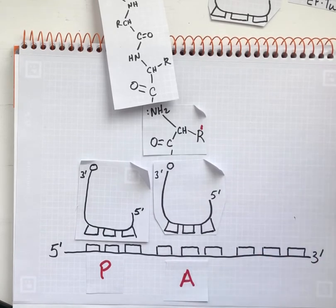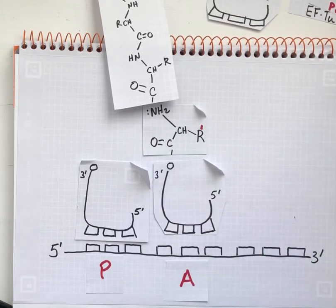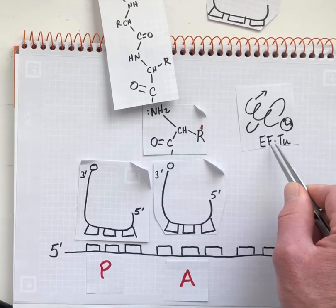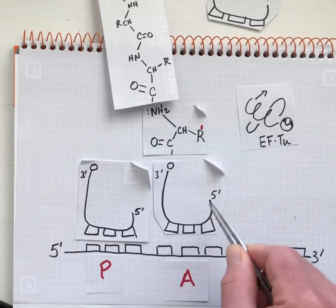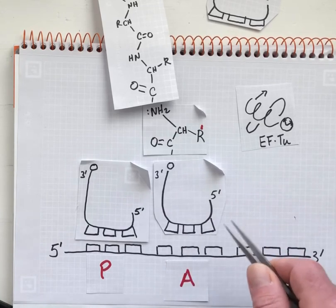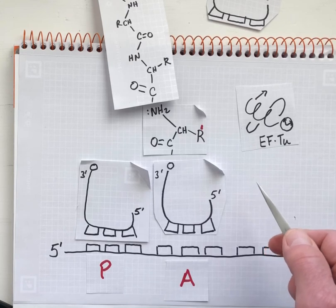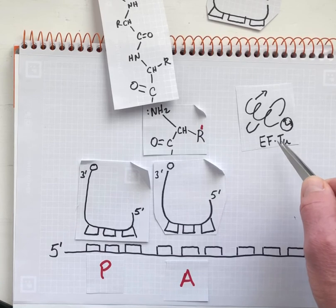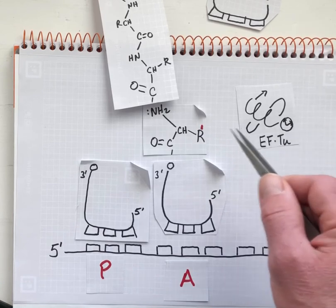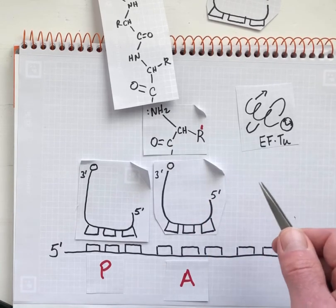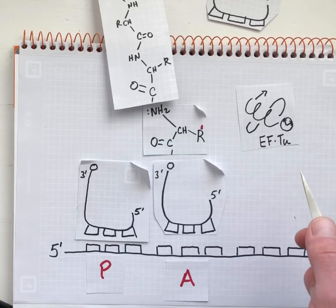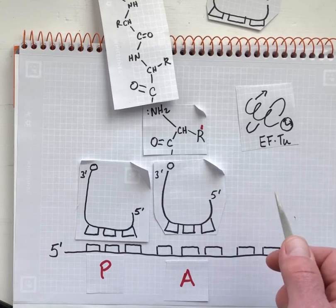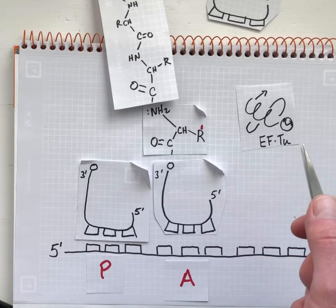The clock function of elongation factor Tu is really critical to allow kinetic opportunity for incorrect aminoacyl tRNAs to leave the A site before they get incorporated into the polypeptide. It's absolutely required that elongation factor Tu convert to this GDP-bound form before catalysis can happen. This is one of the strategies that the ribosome protein synthesis machinery uses to ensure higher fidelity, higher accuracy.